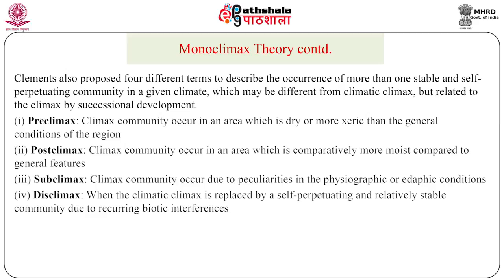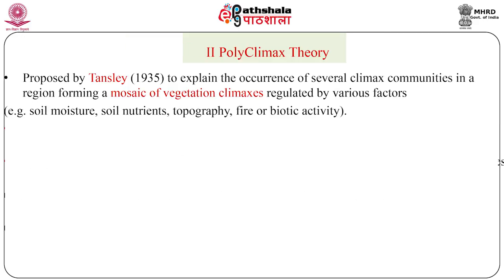The fourth term is disclimax. When the climatic climax is replaced by a self-perpetuating and relatively stable community due to recurring biotic interferences, then such a climax is described as disclimax. The polyclimax theory was proposed by Tansley in 1935.